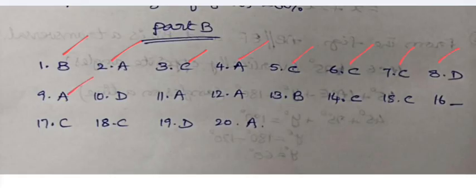15-C, 16 comes out to be not so clear, so 17-C, 18-C, 19-D, 20-A. In this way, this question paper with answers is brought before you.